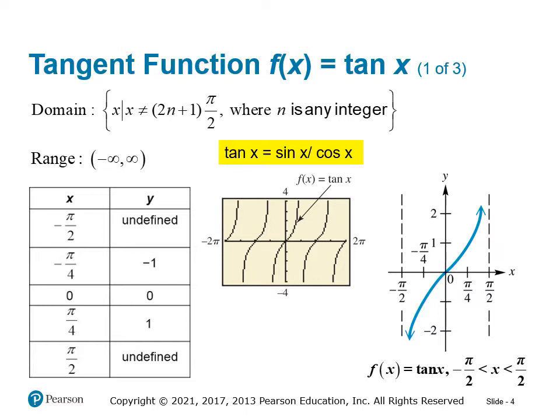Remember that since tangent equals sine over cosine, wherever cosine is zero, tangent is undefined. We have asymptotes at negative pi over 2 and pi over 2 — those are the 270 and 90 degree positions where cosine is zero — so tangent, being sine over cosine, will be undefined at those values.